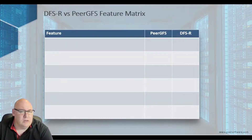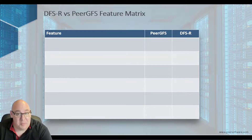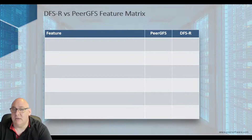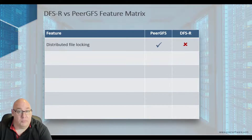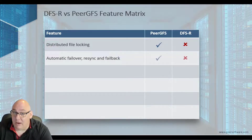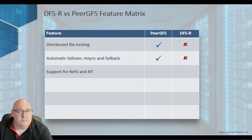To finish up, let's take a look at a feature matrix that will help explain why so many customers find Peer Software when looking for a truly enterprise-grade replacement for DFSR. First: distributed file locking to prevent version conflicts — that's a really big one. Second: automated failover, resynchronization, and failback.